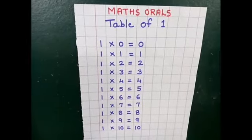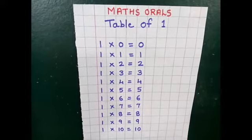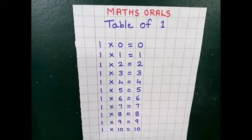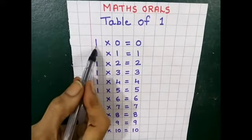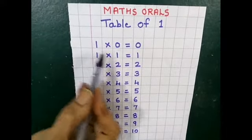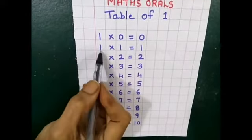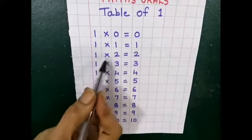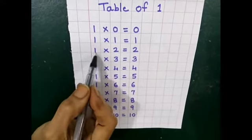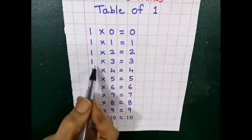Hello children, today we are going to learn table of 1. Now repeat after me. 1 0s are 0. 1 1s are 1. 1 2s are 2.